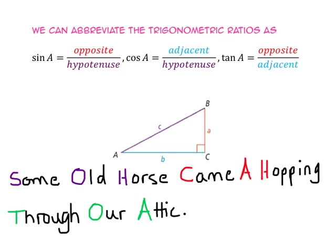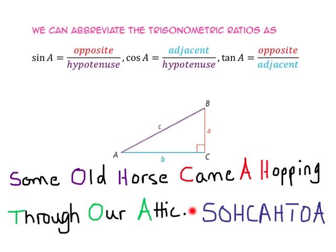Some people like to use SOHCAHTOA to help them. Sine equals opposite over hypotenuse. Cosine equals adjacent over hypotenuse. And tangent equals opposite over adjacent.